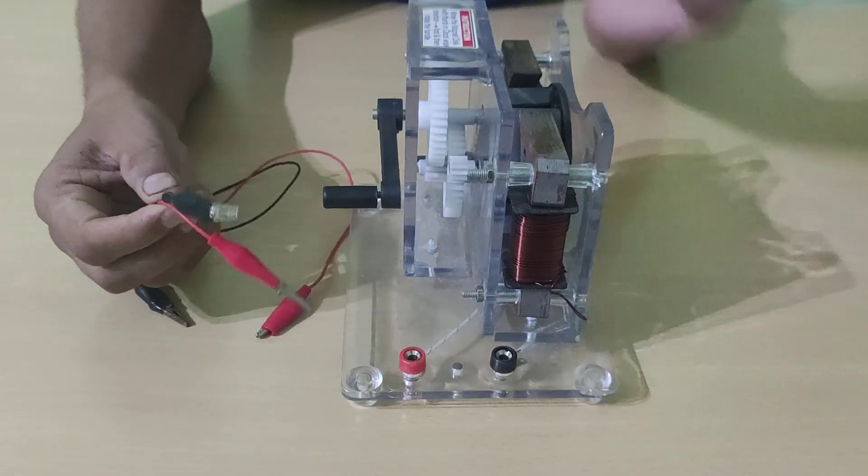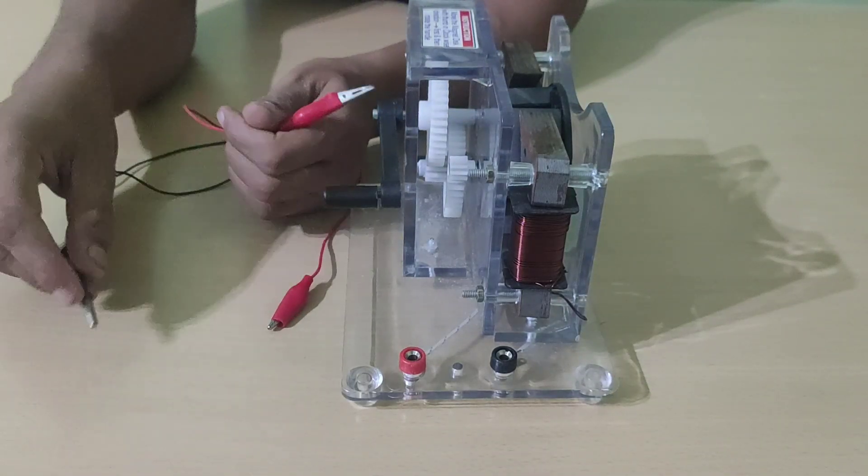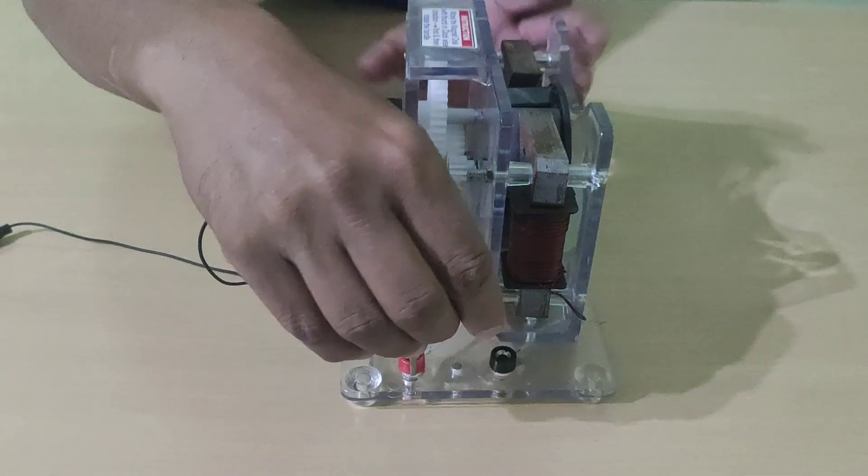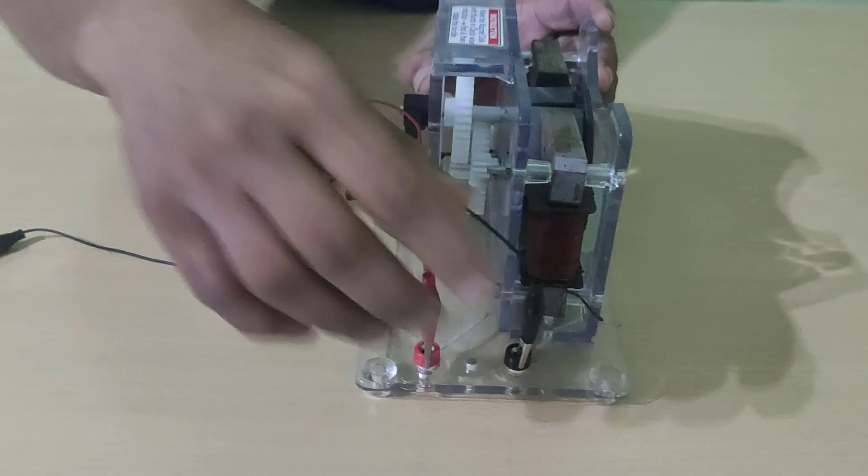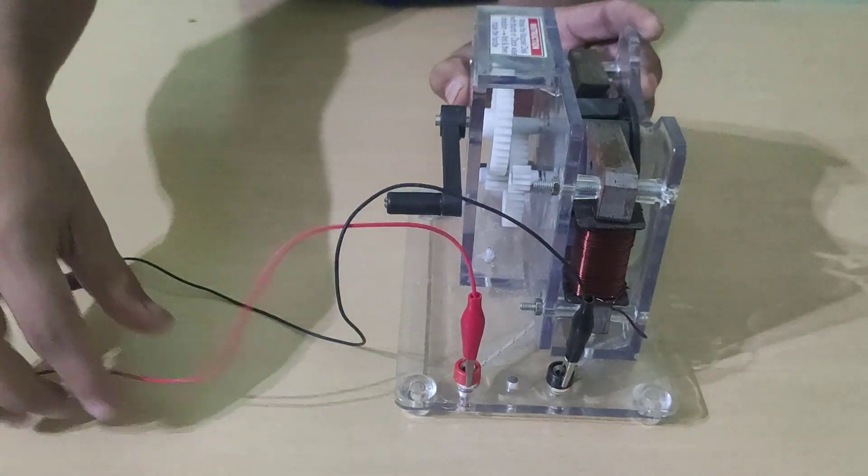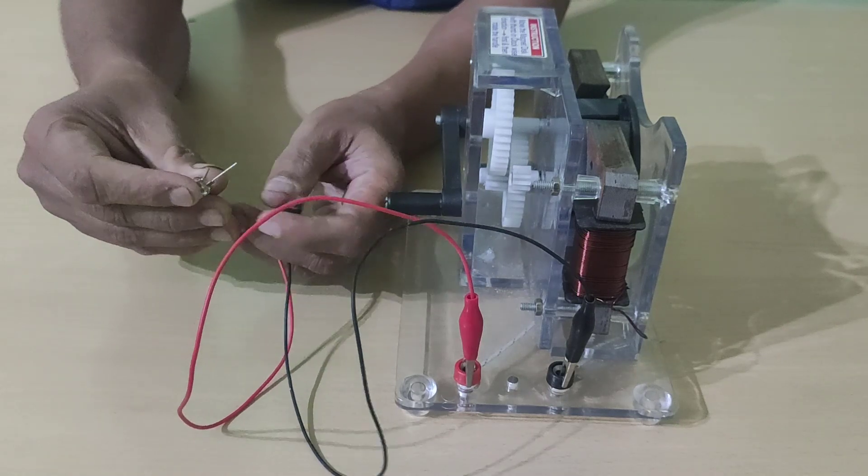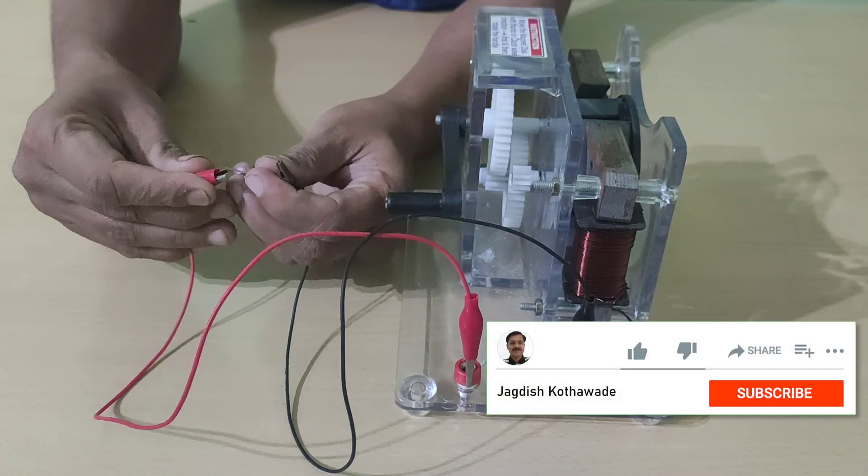For testing we'll use crocodile clips. We'll connect the crocodile clips here to the positive and negative terminals, and the other ends of the crocodile clips we connect to an LED.